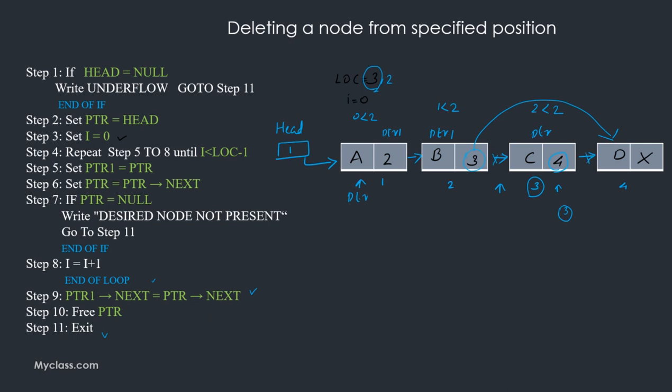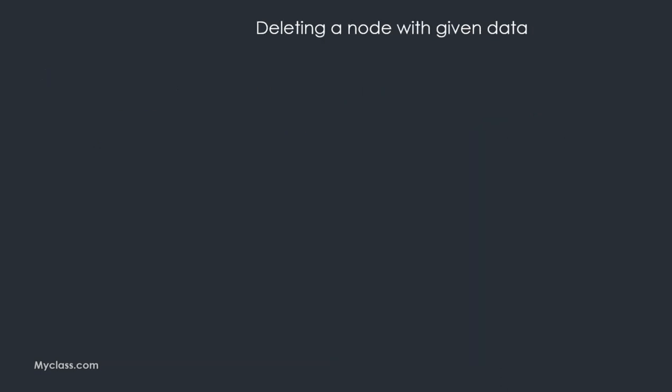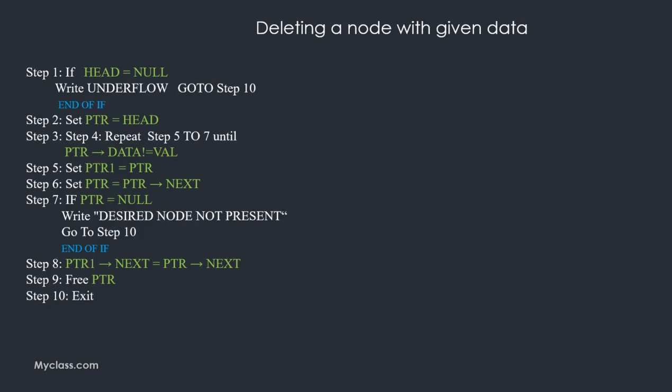To delete the third node, we set ptr1 next equal to ptr next. This establishes a direct connection from node two to node four, bypassing node three. We then free ptr and exit — that completes deleting a node from a specified position.